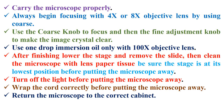For handling the light microscope: 1. Carry the microscope properly. 2. Always begin focusing with the 4x or 8x objective lens using the coarse knob. 3. Use the coarse knob to focus, then the fine adjustment knob to make the image crystal clear. 4. Use one drop of immersion oil only with the 100x objective lens. 5. After finishing, lower the stage and remove the slide, then clean the microscope with lens paper, ensuring the stage is at its lowest position before putting the microscope away. 6. Turn off the light before putting the microscope away. 7. Wrap the cord correctly before putting the microscope away. 8. Return the microscope to the correct cabinet.